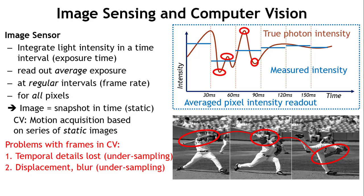For example, if your task is to detect a ball and track its trajectory across the scene, you'll have big difficulties at 30 frames per second — large displacement, motion blur due to finite exposure times, and under-sampling of the motion. On the other hand, a static person in the background produces data that you acquire, store, transmit, and process over and over again just to throw it away — a very inefficient way of doing vision.